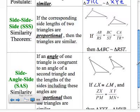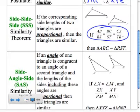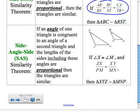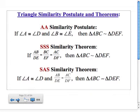SSS, or side-side-side, simply says: if you want to show two triangles are similar, just show that all three sides are proportional. You don't have to show anything about the angles — just show that the corresponding side lengths are proportional and that is enough. The third shortcut, side-angle-side (SAS), requires that the angle is between the two sides you're talking about. So in the diagram, if you can show angle X and M are congruent and that ZX over MP has the same ratio as XY over MN, then the triangles have to be similar. Be careful — it's SAS, not SSA.